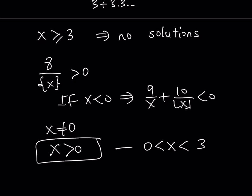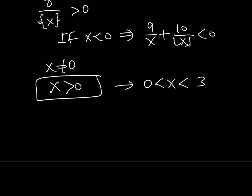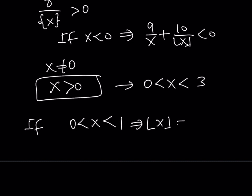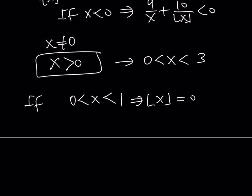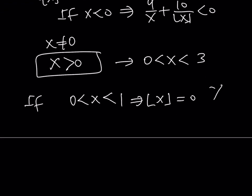It makes sense to break down the interval (0, 3) into subintervals. Case 1: if x is between 0 and 1, then the floor value of x is going to be 0, which makes the expression 10 over floor value of x undefined. So x cannot be between 0 and 1 — this case does not work.